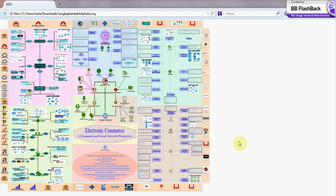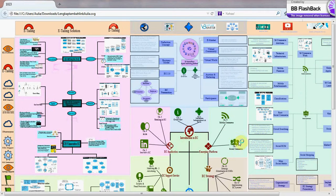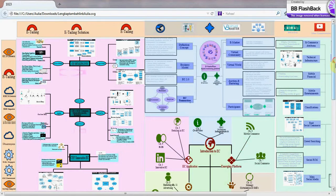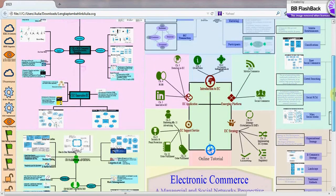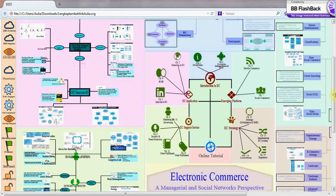This map has seven blocks and five main topics. Our five main topics are: introduction to electronic commerce, electronic commerce application, electronic commerce support service, emerging platform of electronic commerce, and the last one is electronic commerce strategy.